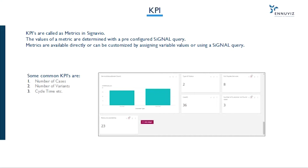KPIs are called metrics in Signavio. The values of a metric are determined with pre-configured signal queries. Metrics are available directly or can be customized by assigning variable values or using signal queries. Some common KPIs in Signavio are number of cases, number of variants, cycle time, etc.